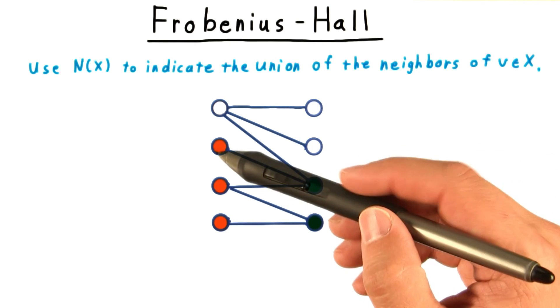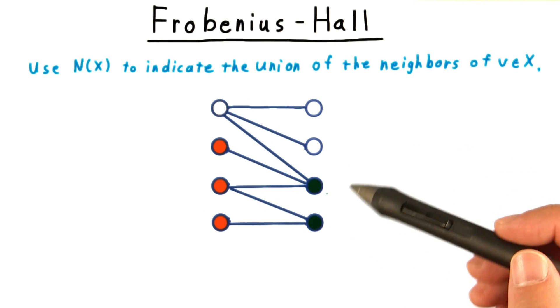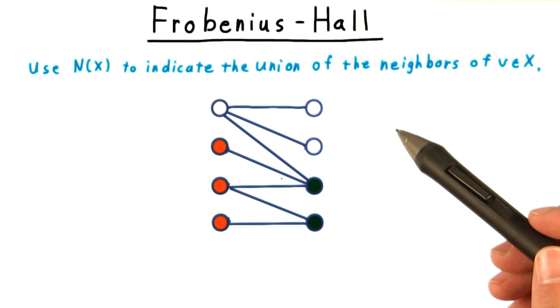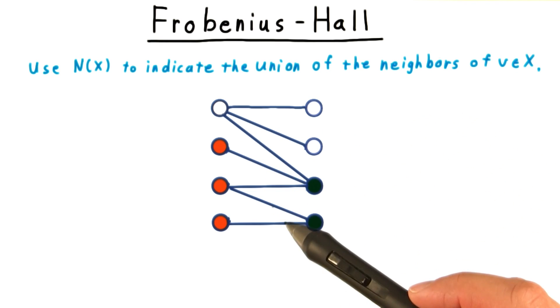When this is not the case, however, as seen for these three vertices here, then it is hopeless. Regardless of how we match the first two, there will be no remaining candidates for the third vertex.